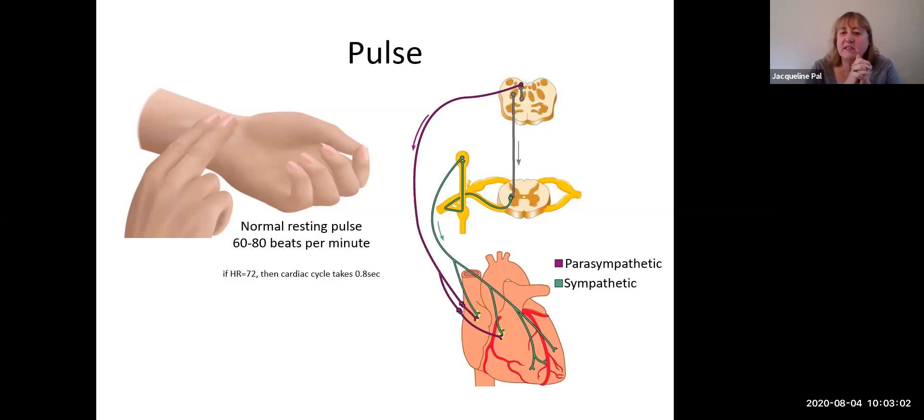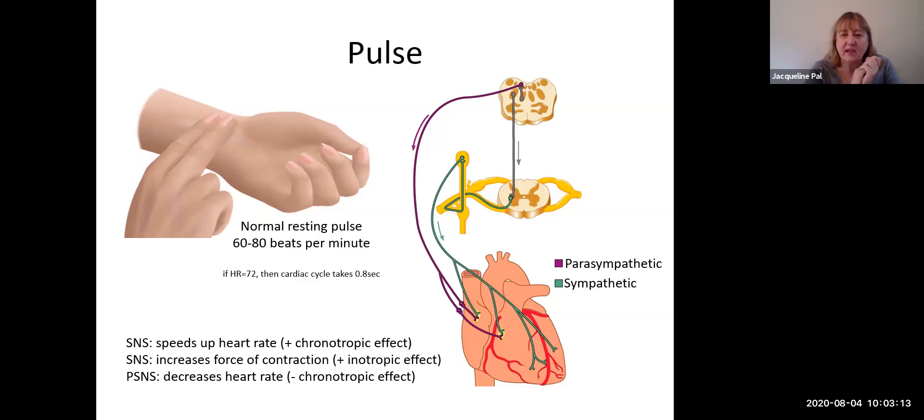Remember that the heart has both parasympathetic and sympathetic innervation, and that introduces some new terminology. Sympathetic stimulation of the SA node or the AV node or the ventricles can speed up the heart rate. So it speeds up the timing of the heart, which is considered a chronotropic effect, chronos meaning time. A positive chronotropic effect is when the heart rate goes up, and that's what sympathetic nervous stimulation does. In contrast, parasympathetic stimulation to either the sinoatrial node or the atrioventricular node will decrease the heart rate, so it has a negative chronotropic effect.